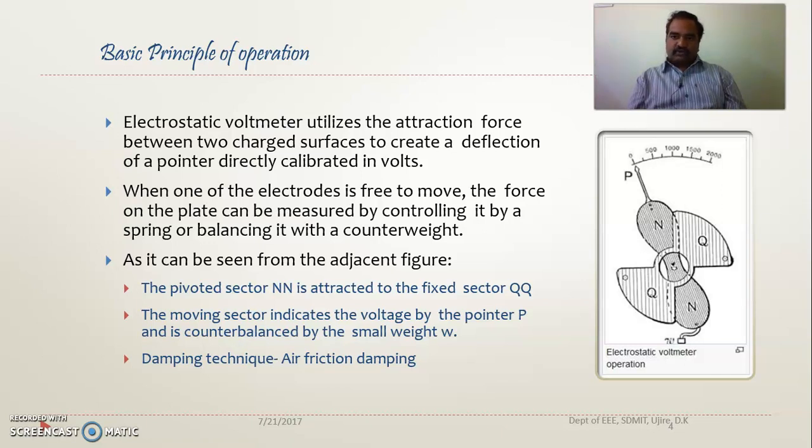As you all know, as you have already studied in your measuring instruments course, there will be three torques which will be produced in measuring instruments: deflecting torque, controlling torque, and damping torque. Here the deflecting torque is being produced by your electrostatic force. The controlling will be provided by some weight and damping torque will be provided by air friction damping. Once again repeating: controlling torque by a counterweight, damping torque by air friction damping, and the major deflecting torque will be due to the electrostatic force between a fixed plate and a movable plate.